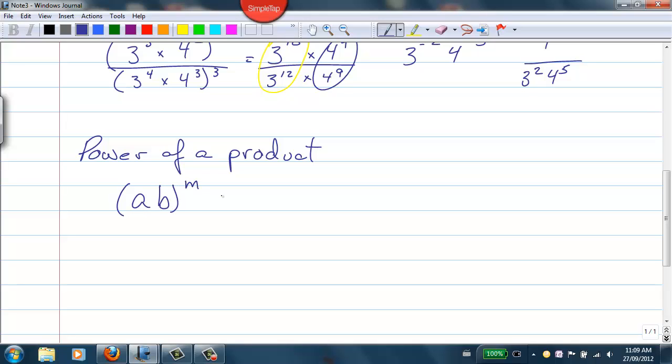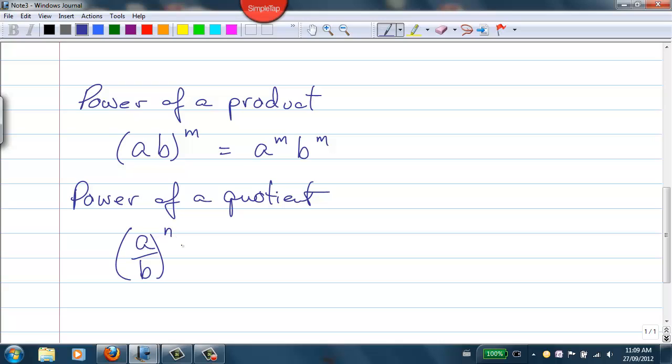So the power of a product rule says that if I've got some product, a times b to the power of m, it'll equal a to the m times b to the m. And if I have some quotient, a over b to the power of n, it'll equal a to the n over b to the n.